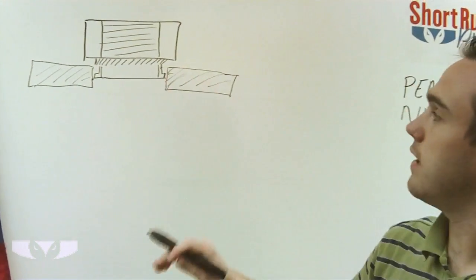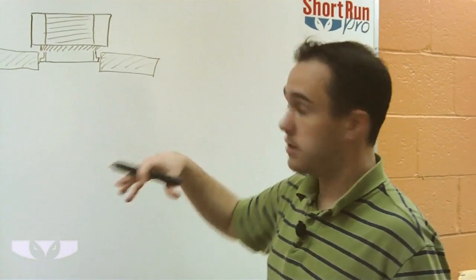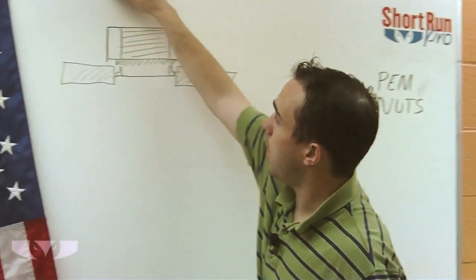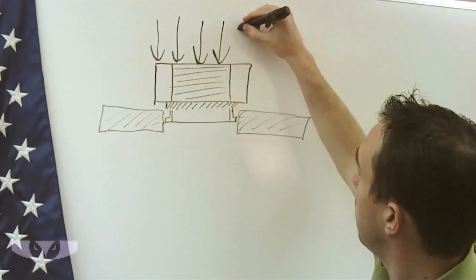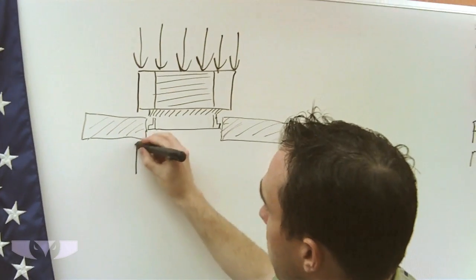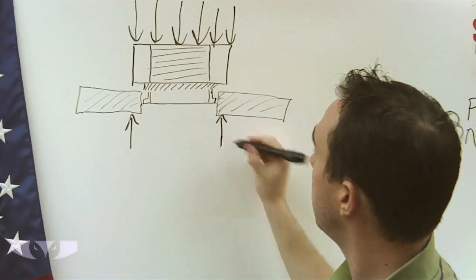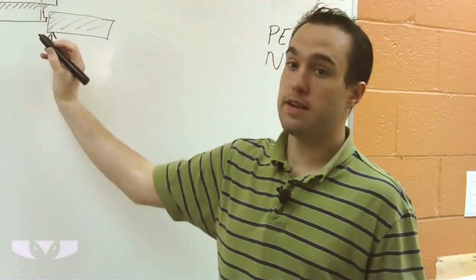Now once we put it in there, what we do is we use a press that's specific for PEM nuts to put a lot of pressure down on the PEM nut and simultaneously put a lot of pressure up from the metal right around this area.